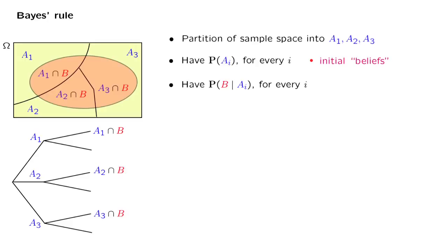Now, under each scenario, we also have the probability that an event of interest, event B, will occur.